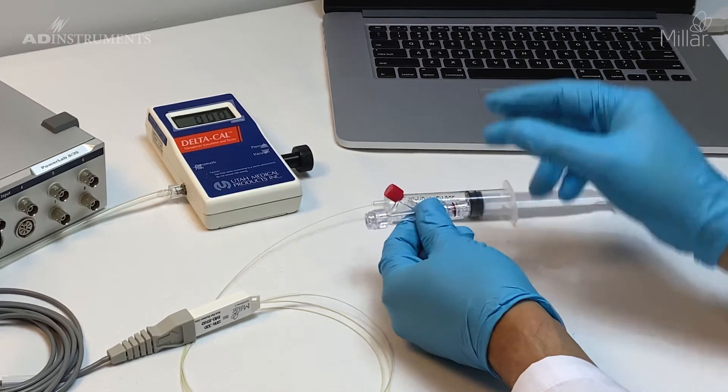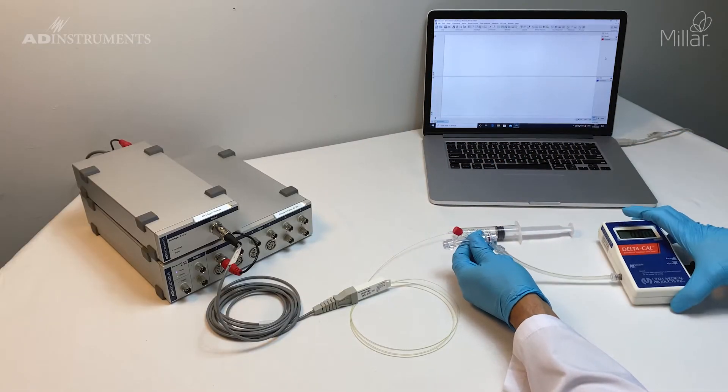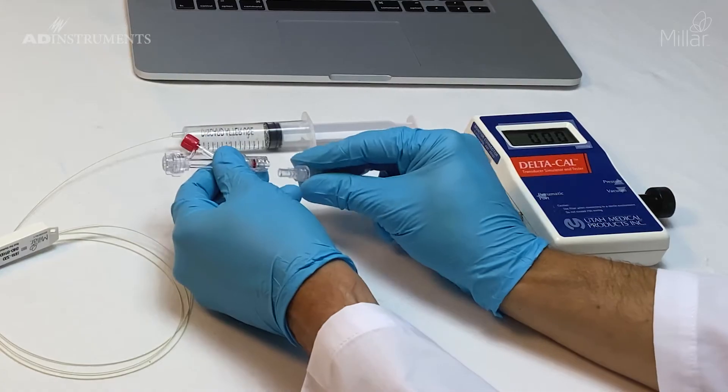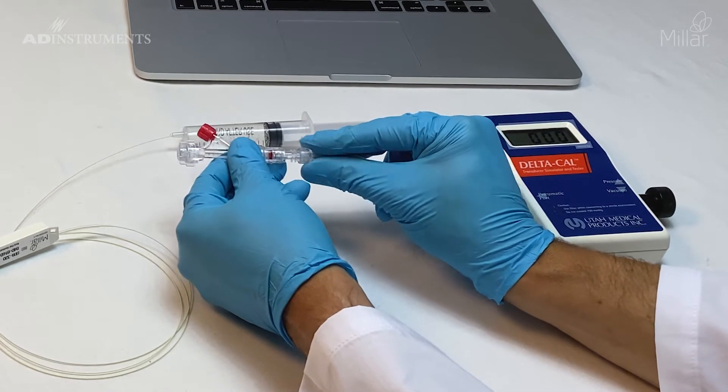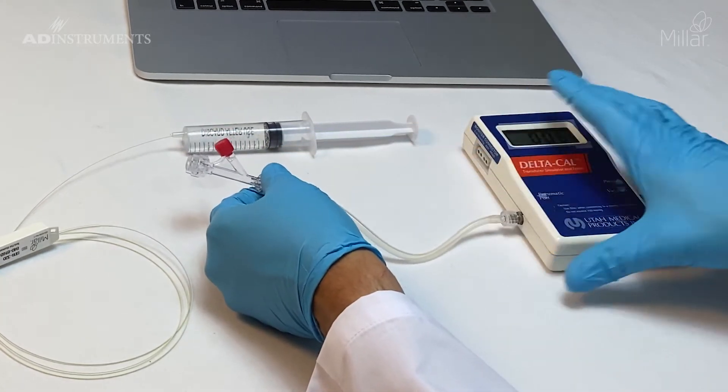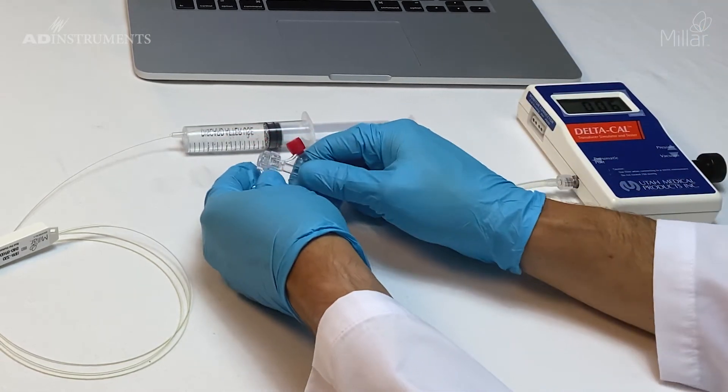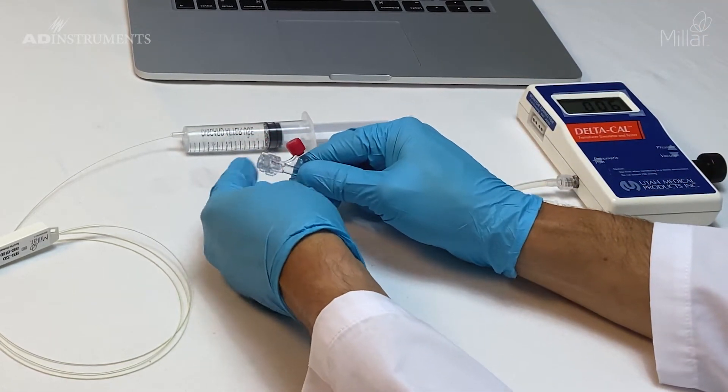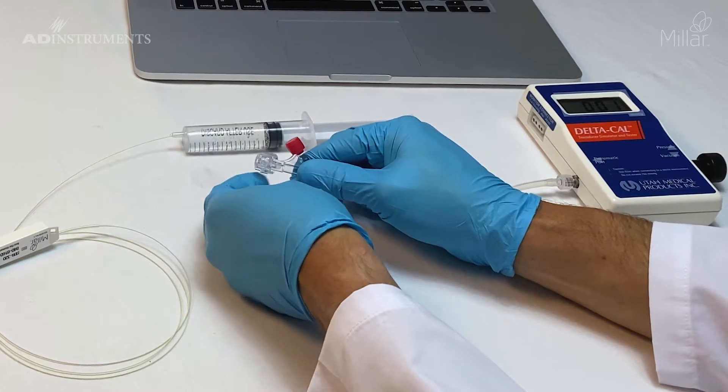Now I'll attach the hemostatic valve to the DeltaCal, making sure it's a tight fit, then open the valve all the way.